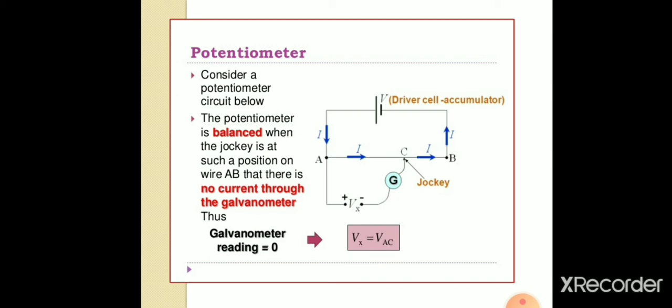Let us consider a potentiometer circuit given below. The potentiometer is said to be balanced when the jockey key is at such a position on wire AB so that there is no current through the galvanometer, as we had seen in meter bridge.